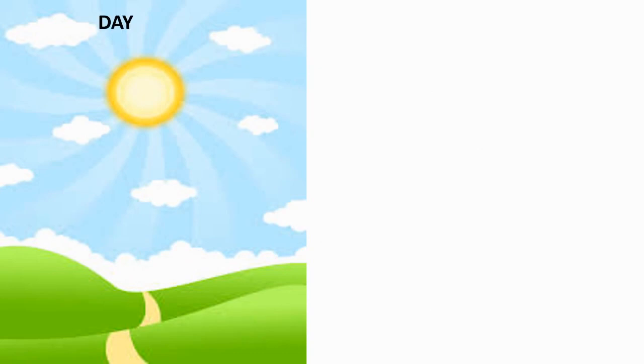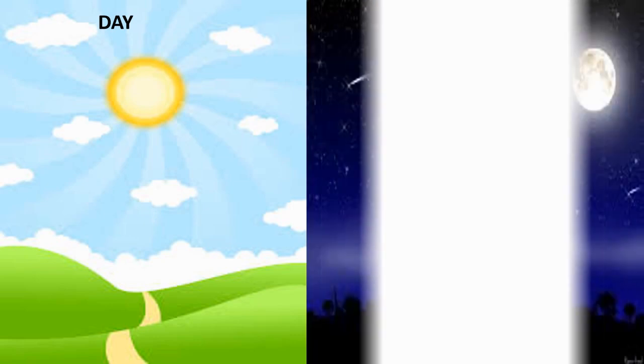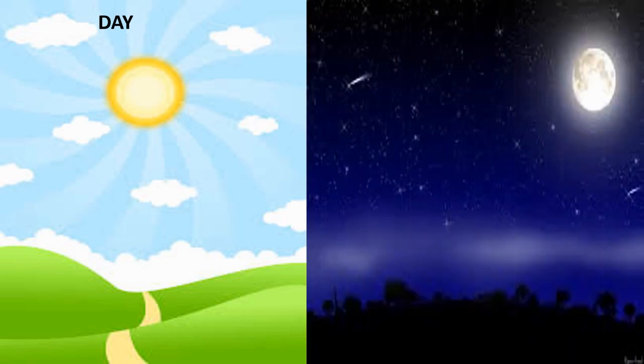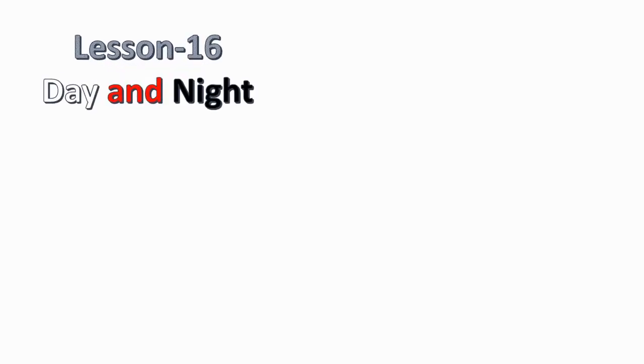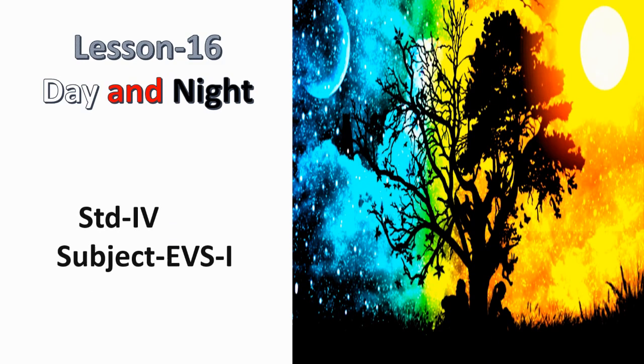Students, can you see the first picture? The sun has risen into the sky, so we call it a day. Now we will see the second picture. Can you see in the second picture? The moon is in the sky, so it is known as night. Today we are going to study a new lesson: Day and Night. Lesson number 16, Day and Night. Standard 4, subject EVS 1.